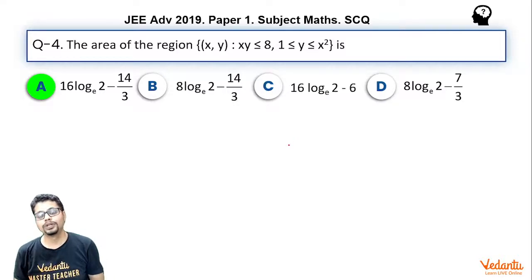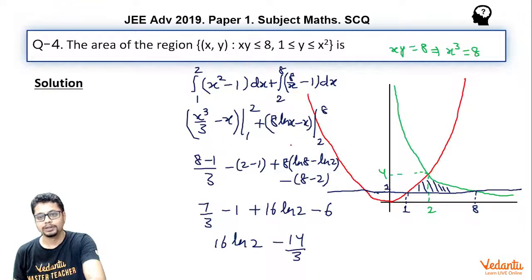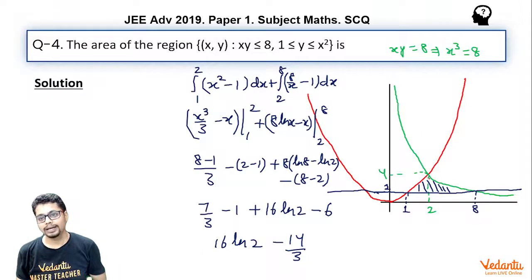Now let's solve using horizontal strips as well. So as we see this region, I can say the right curve is essentially xy = 8, or rather x = 8/y, and the left curve is essentially y = x², or you may say x = √y. Why? Because x is positive. So you would not take -√y, you will take √y. So it is right curve minus left curve integrated from y = 1 to y = 4.